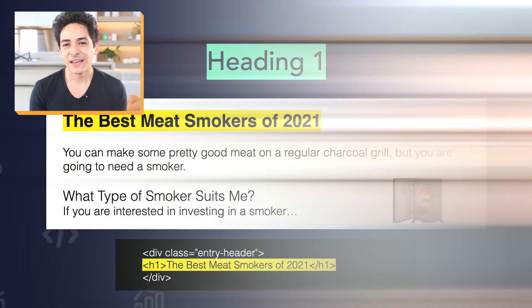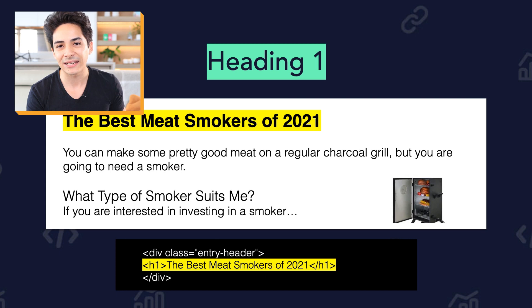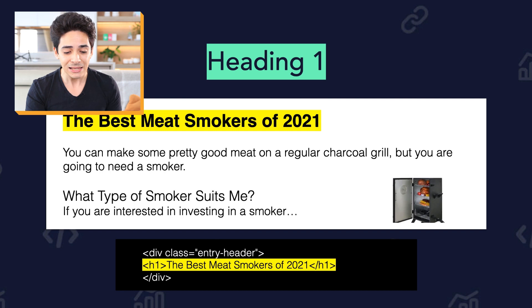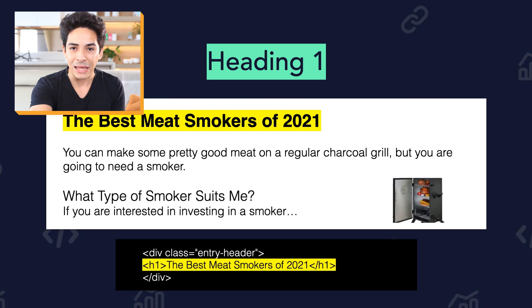The next item is the H1 — the Heading 1 element. This is the main heading on the page. If you go into a blog post and there's a big title at the top, if it's marked up correctly, it should be wrapped in an H1 tag. Learn the basics of HTML — it will absolutely help with auditing and analysis. As you can see in the source code example, it's just wrapped in an H1 tag, and it's the main title of the blog post, product category, or product page.